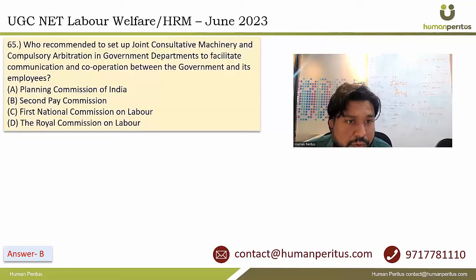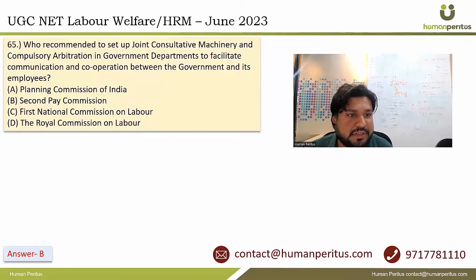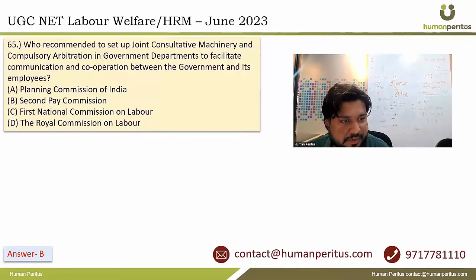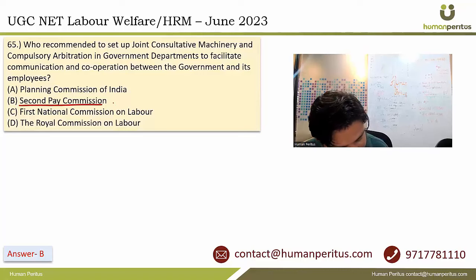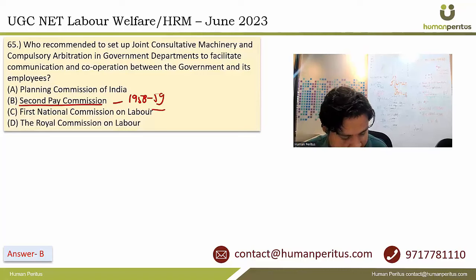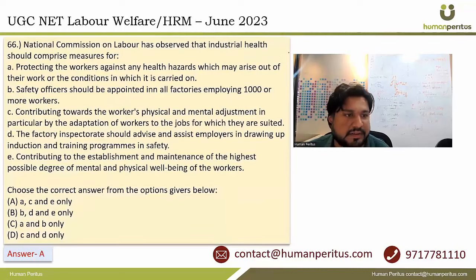Who recommended setting up joint consultative machinery and compulsory arbitration? The Second Pay Commission recommended this in 1958-59, and finally around 1966 it came into existence.